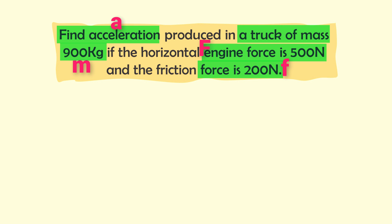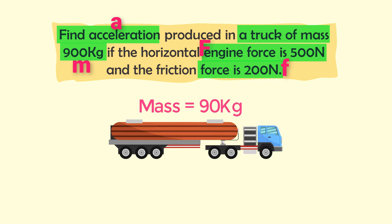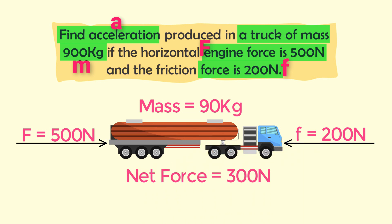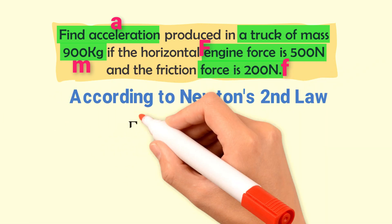Let me draw a free-body diagram. Consider a truck of mass 900 kg. The horizontal engine force F of 500 newtons acts forward, while the friction force f of 200 newtons acts in the opposite direction. The net or resultant force on the truck is 300 newtons. This net force of 300 newtons produces acceleration A in the truck.